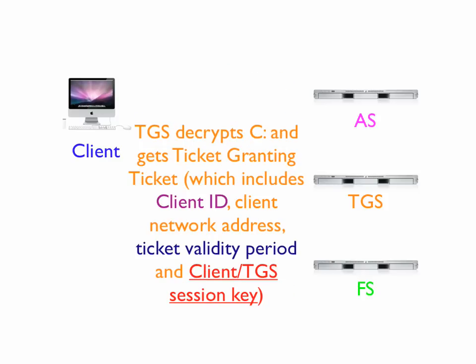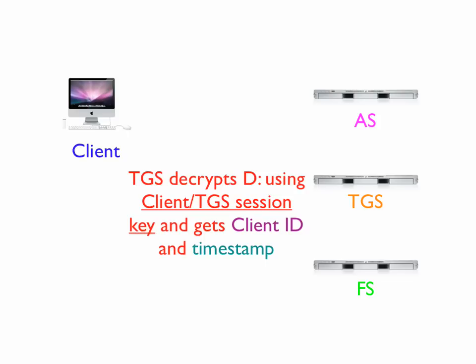The TGS decrypts message C and gets the ticket-granting ticket, which includes the client ID, client network address, ticket validity period, and the client-TGS session key. Now both the client and the TGS can communicate because both have the client-TGS session key. The TGS uses that session key to decrypt message D, so it gets the client ID and a timestamp, telling it when the client sent this message.